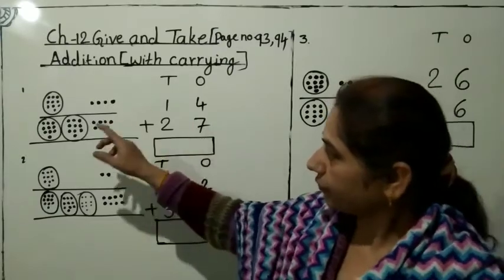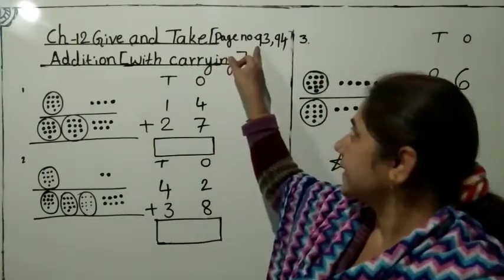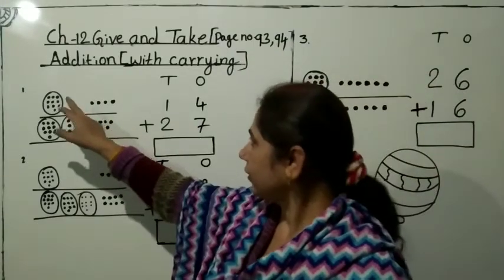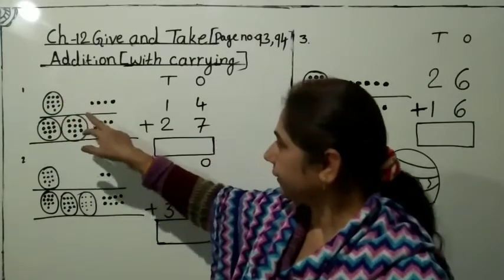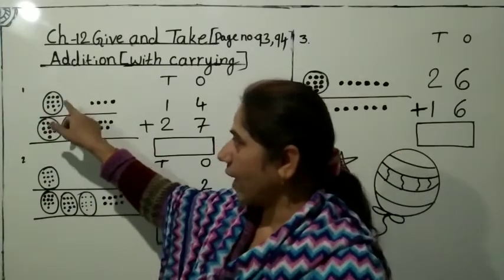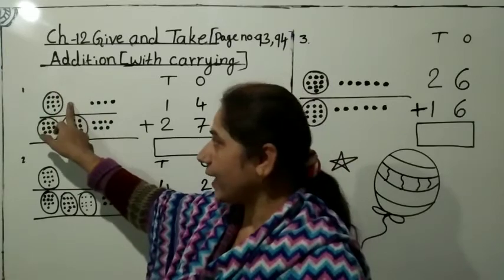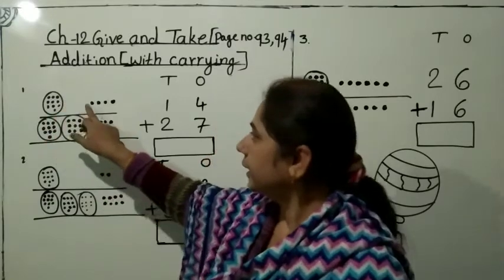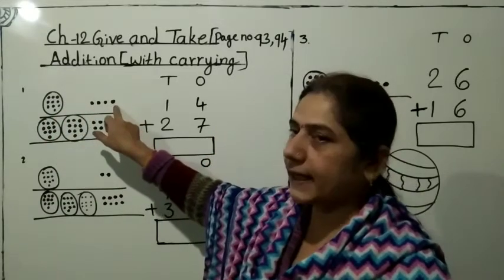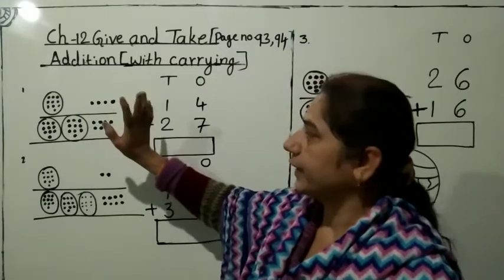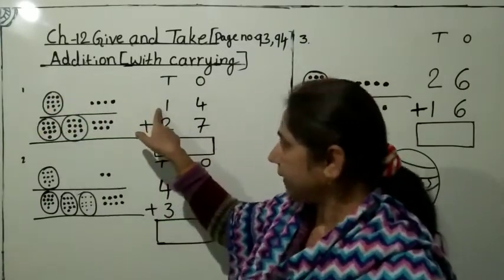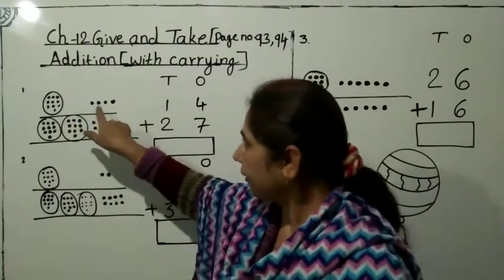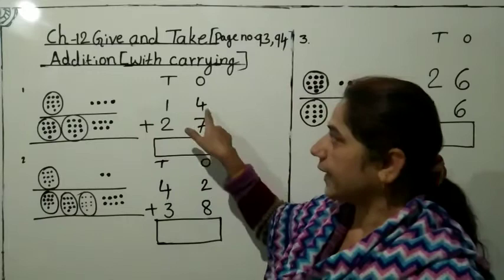Now what we are learning? With carrying. See now, here in your textbook page number 93, 94. Now see here, just you see first example here. How many groups are there? One group means one ten. Here loose, how many loose? One, two, three, four. So one ten and four ones.